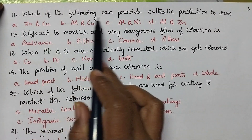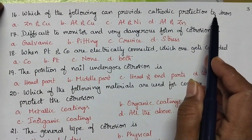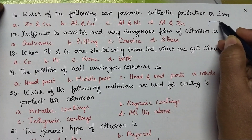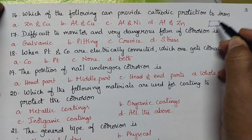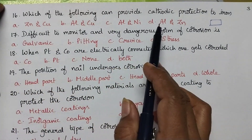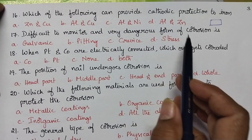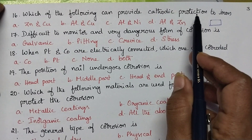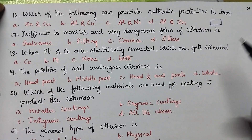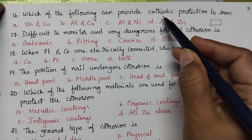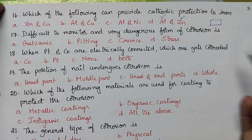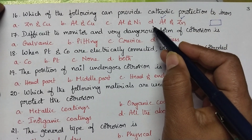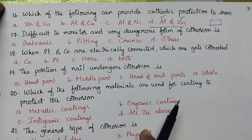Which of the following can provide cathodic protection to iron? To protect iron from corrosion, iron is made the cathode, so we must identify which metals are anodic to iron. From the electrochemical series, aluminium and zinc are higher than iron, so the right option is aluminium and zinc.